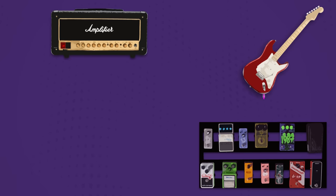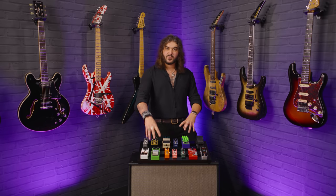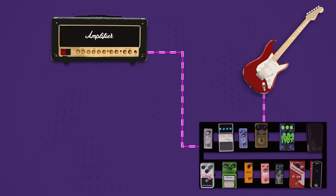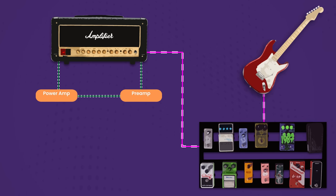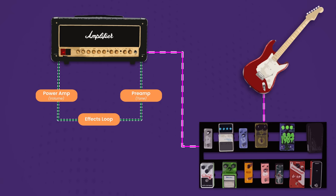Now let's talk about time-based effects and how an effects loop works. I'm running all these pedals into a clean amplifier, into the front of a clean amp, using it as a pedal platform — straight into the preamp. The way an amplifier is made, there are two main sections: the preamp and the power amp. The preamp is where you get the tone — all the tone shaping, whether it be a clean amp or a distorted amp. The power amp is where you get the power — the volume. What sits between the preamp and the power amp of most amplifiers is an effects loop: an in and out where you can put time-based effects that you want to manipulate after your core sound is created.